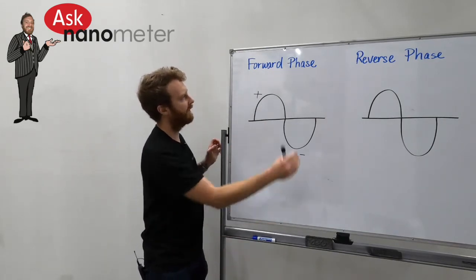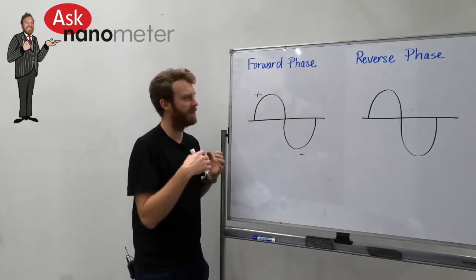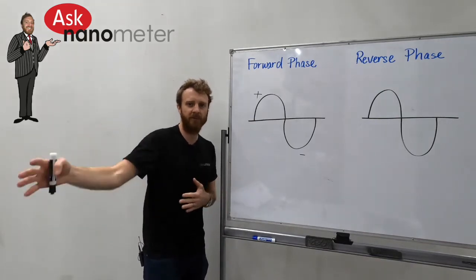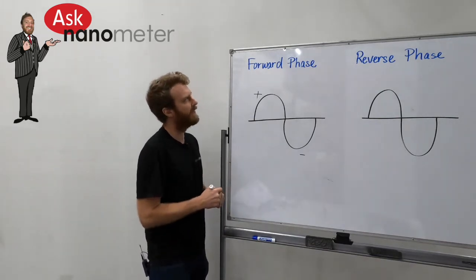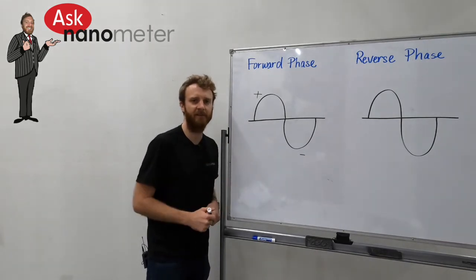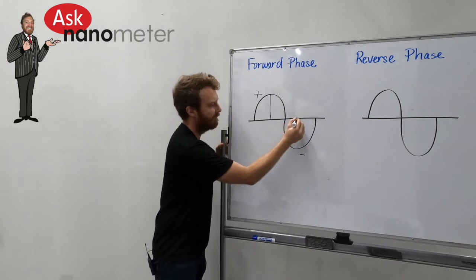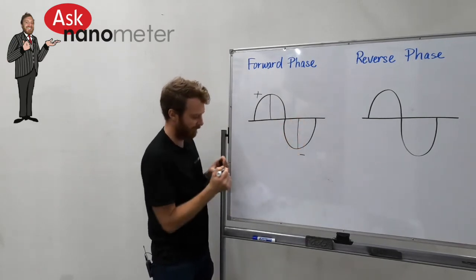When we attach a forward phase dimmer or a leading edge dimmer, what we're actually doing is manipulating that power in order to dim the driver that's attached to it. If we take the dimmer and set it to 50 percent, what it's effectively going to do is hack off the front side of the sine wave.